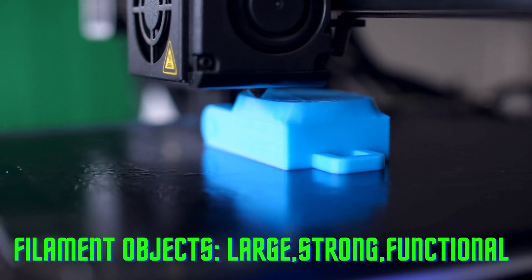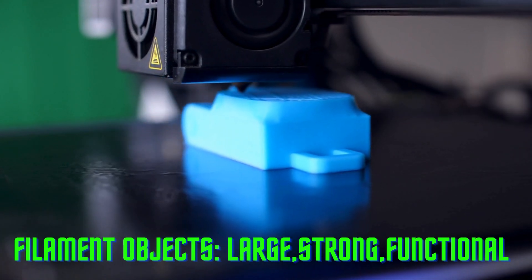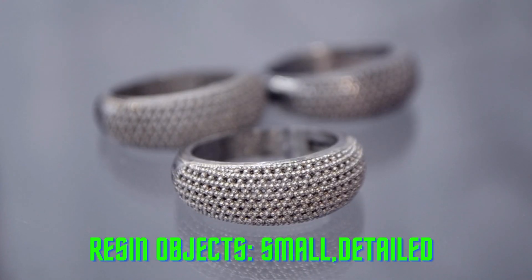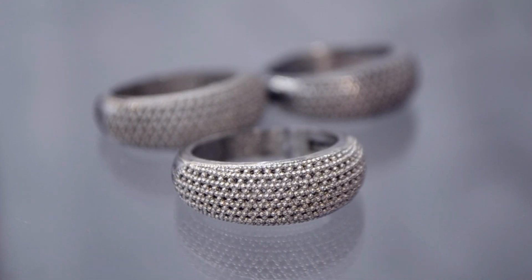If you want to print large, strong, and functional objects, go for a filament printer. If you want to print small, detailed, and beautiful objects, go for a resin printer. Or if you can afford it, why not get both?